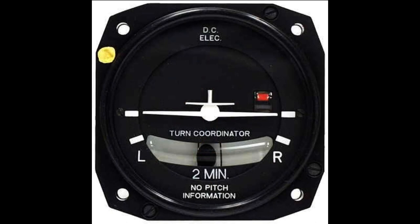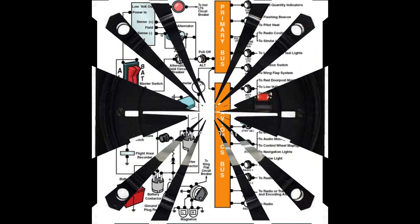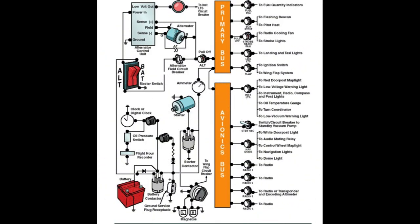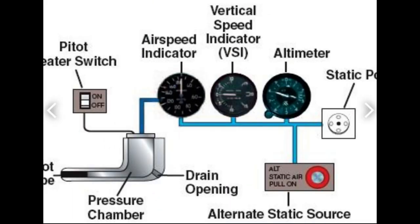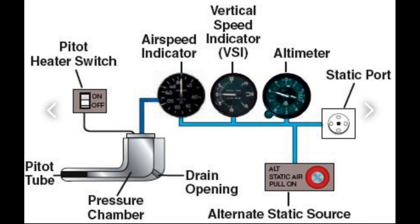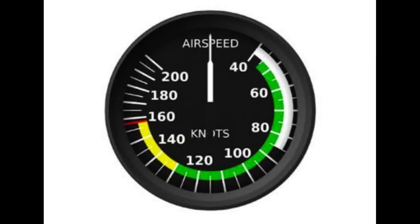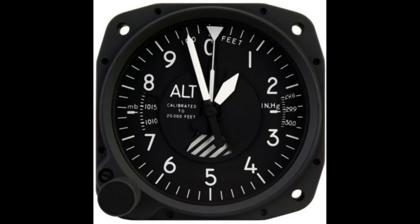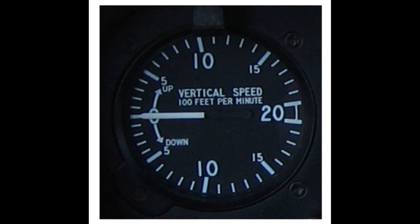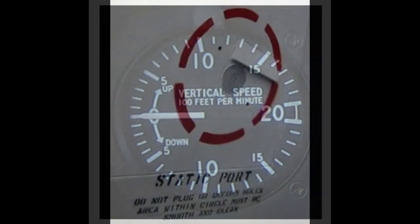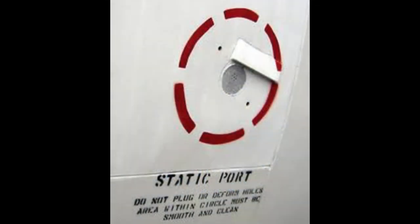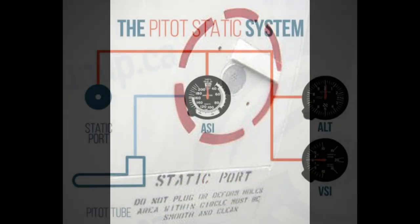Several aircraft systems provide electricity to the six instruments. The pitot-static system, which delivers ram air pressure from the pitot tube and ambient pressure from the static port, is used by the ASI, altimeter, and VSI. All three instruments use the static port, however only the ASI makes use of the pitot tube.